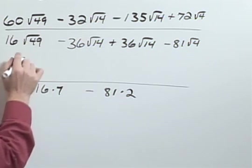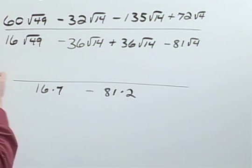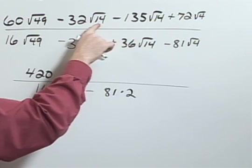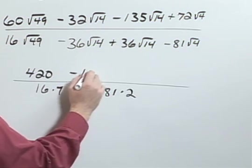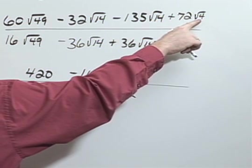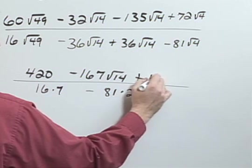Up here in the top, I'm going to have 7, because the square root of 49 is 7. 7 times 60 is 420. I can combine these to give me minus 167 square root of 14. And then the square root of 4 is 2, so 2 times 72 would be 144.